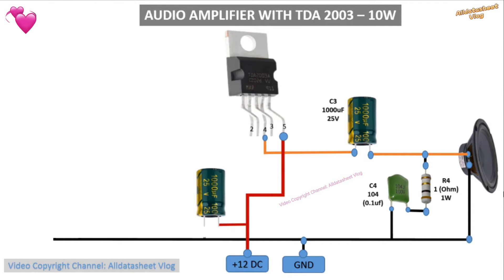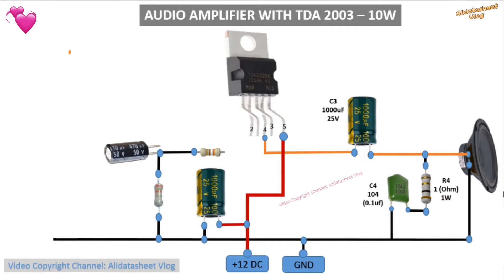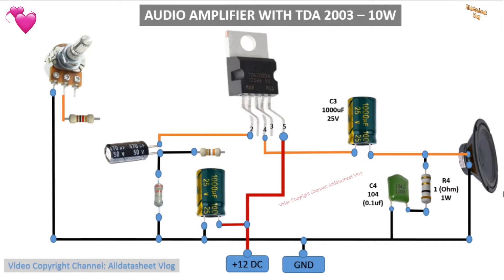Parts list: VR1 is a potentiometer for volume adjustment, from 10k to 50k. C1: without the woofer it could be 1 or 2.2 microfarads at 10 volts or more. If you want better low frequency response, then maybe 10 microfarads.